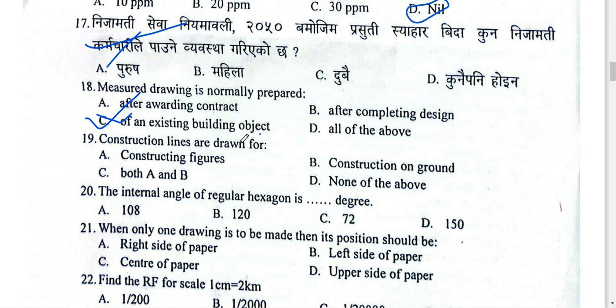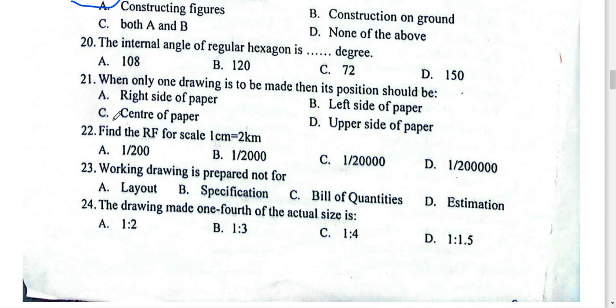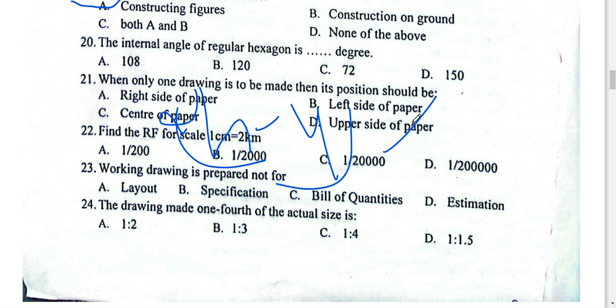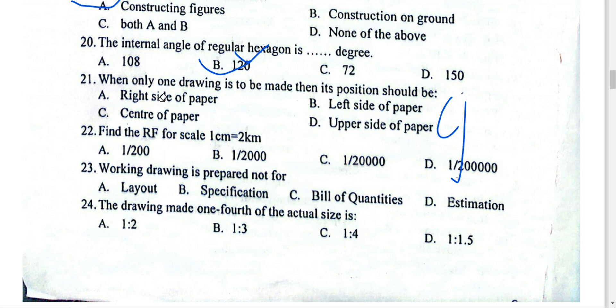A construction line is drawn for the actual command area — you can use an infinite construction line. The internal angle of a regular polygon is (2n − 4) × 90 degrees, divided by n. For a hexagon that gives 120 degrees. This applies to pentagons and hexagons.